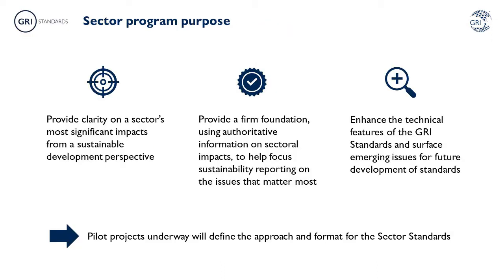At the beginning of 2019, we launched the GRI Sector Programme with the objective of providing clarity on which topics constitute a sector's most significant impacts from a sustainable development perspective, and creating a foundation for improving transparency and more consistent reporting from organisations in the same sector. Beyond the Sector Standards themselves, this programme is also intended to surface emerging issues for the future development of topic standards.